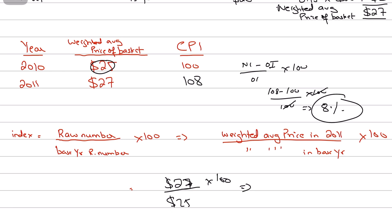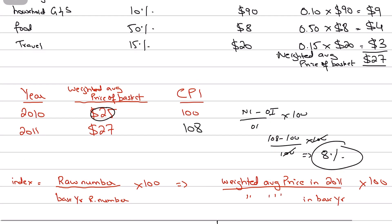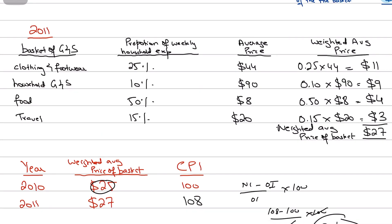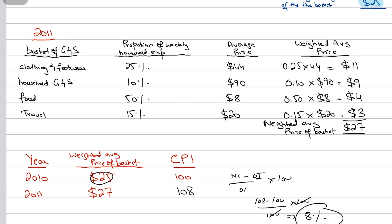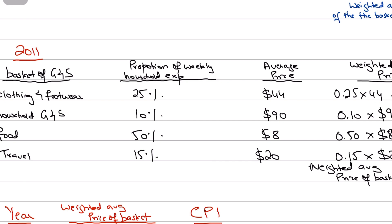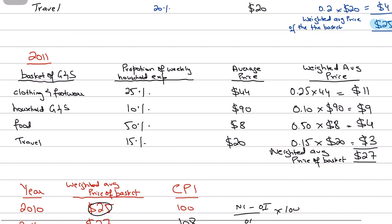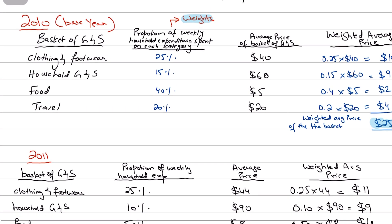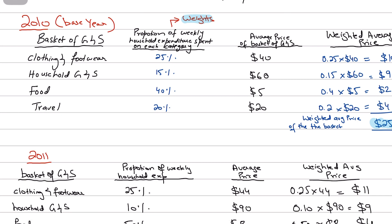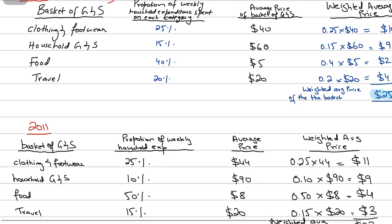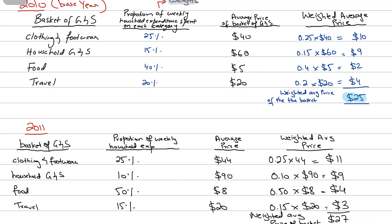It's important to remember the role of weights — the proportion of household expenditure on items in the basket of goods. Weights tell us the relative importance of each item. For example, a 10% increase in the price of clothing and footwear (from $40 to $44) matters more to households than a 10% increase in household goods and services.